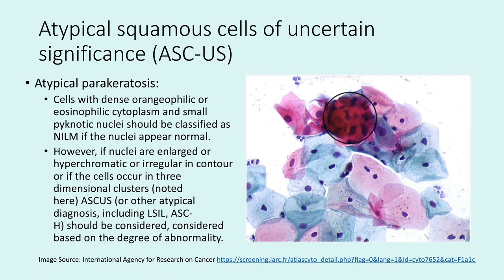Another subcategory is atypical parakeratosis — cells with dense orangophilic or eosinophilic cytoplasm and small pyknotic nuclei. These should be classified as normal if the nuclei appear normal. However, if the nuclei show hyperchromasia, irregular outlines, or appear in three-dimensional clusters, you can call it ASCUS. If changes look like low-grade or high-grade in such areas, you can make those diagnoses instead. Atypical parakeratosis is not in itself a diagnosis, but many of these cases fit into the ASCUS category.